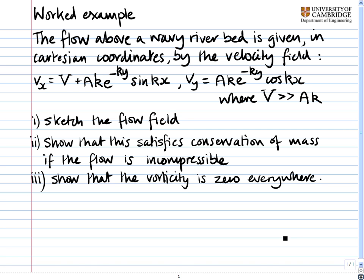The flow above a wavy riverbed is given in Cartesian coordinates by the velocity field: vx equals V plus Ak e to the minus ky sin kx, vy equals Ak e to the minus ky cos kx, where V is much bigger than Ak.